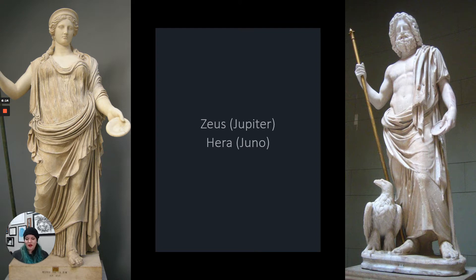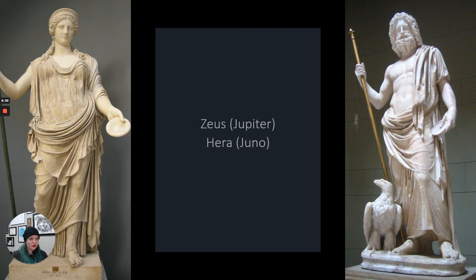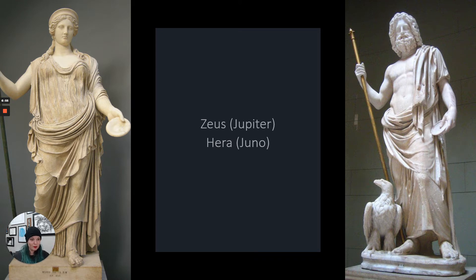Zeus's wife is Hera — her Roman name is Juno. She is Zeus's wife and also Zeus's sister, kind of like with the Egyptians where there's some incestuous stuff with gods and goddesses as well. She is the goddess of marriage, which I've always thought was sort of a mockery, because if you know anything about mythology, you know Zeus cheated on her constantly. Hera is a little bit hard to pick out — there's usually some context clue, but she doesn't have a set symbol like Zeus does.